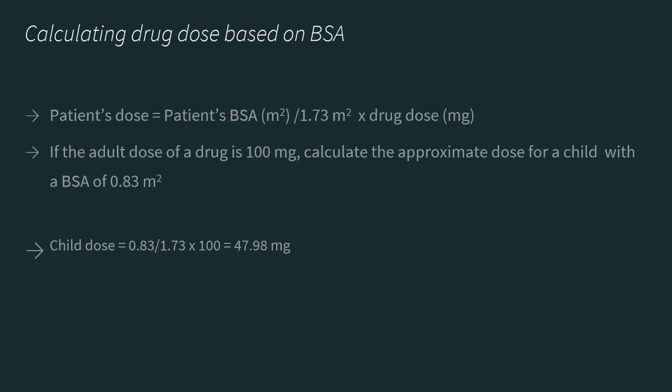Now that we know how to calculate BSA, let's look at how to calculate drug dosage based on the BSA. BSA is commonly used in pediatric patients. A useful formula that can be used to calculate a patient's dose based on the BSA is: patient's dose equals patient's BSA divided by 1.73, times the drug dosage in milligrams.